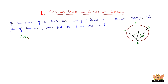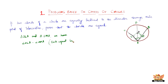In triangle OLA and triangle OMA, we have angle OLA equal to angle OMA, because OL and OM were drawn perpendicular to AC and AB respectively. Therefore angle OLA and angle OMA are each equal to 90 degrees.